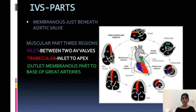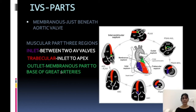The trabecular septum starts from the cardiac apex. The inlet septum is between the two atrioventricular valves, as you can see more clearly in the four-chamber view. Then we have the outlet septum. As the name suggests, it will be somewhere near the great arteries — near the origin of the great vessels, the aorta and pulmonary artery.